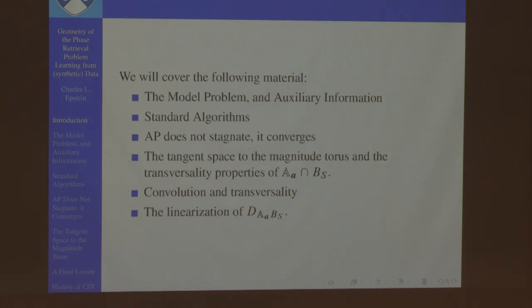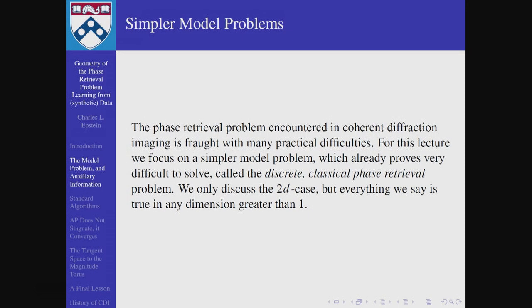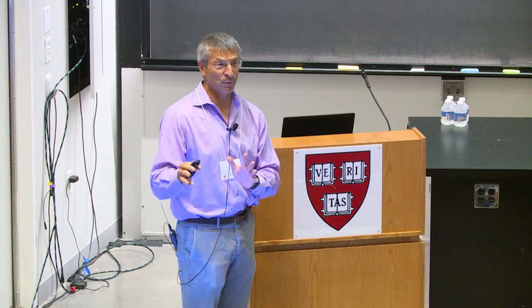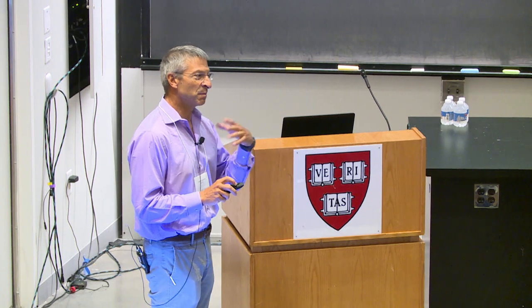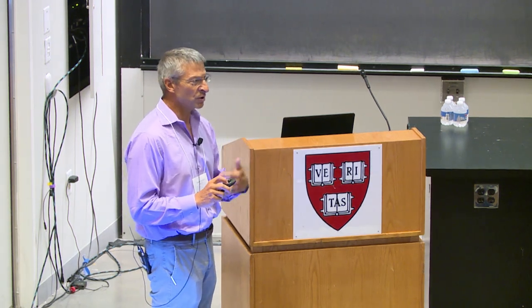I'll talk about a model problem. It's very difficult to even talk about the real problem because there are so many issues with the measurements. So I'll replace it with a somewhat simpler problem — a related one — which we call the discrete classical phase retrieval problem. I'm only going to talk about the 2D case, but everything I say is true in dimensions greater than one. One dimension is a special case where the problem is not solvable and there are always multiple solutions given the phase information.